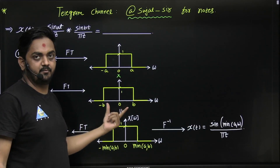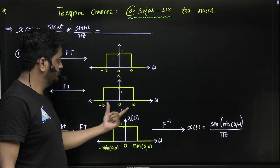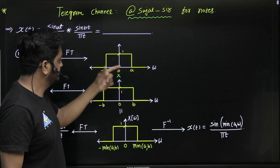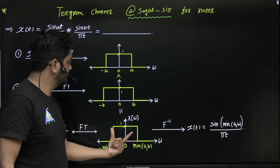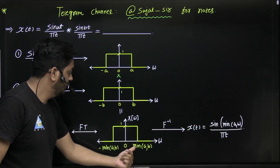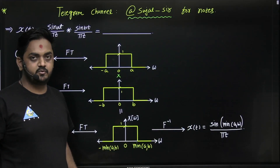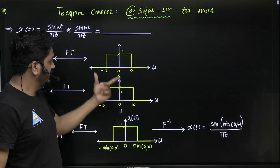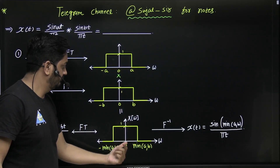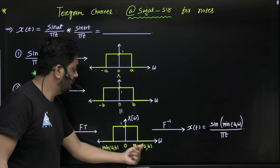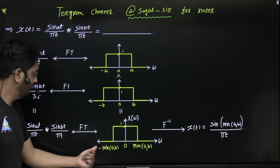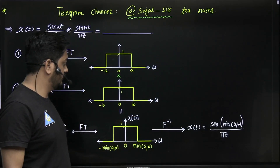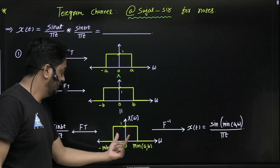In the frequency domain, we multiply the two spectra point by point. Since one spectrum spans minus a to a and the other spans minus b to b, the multiplication results in a rectangle function whose limits are the minimum of a and b. So the product is a rectangle from minus min(a, b) to plus min(a, b) with amplitude 1.